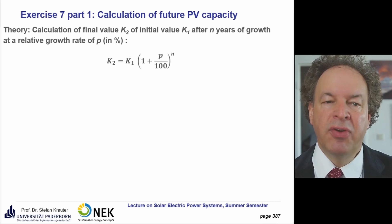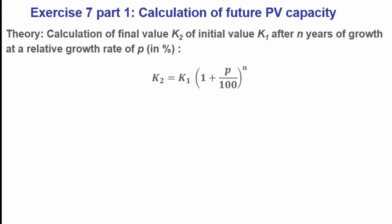If you want to calculate the final value of our initial value after N years of growth, and we have a relative growth rate of P in percent, we have the following formula: K2 equals K1 times (1 plus percentage rate divided by 100) to the exponent N.